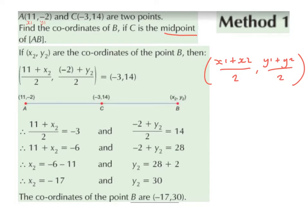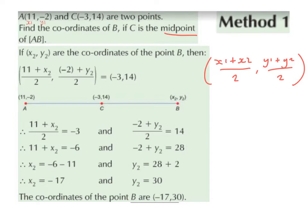So substituting into our formula, we swap x1 for 11, bring over the plus, and x2 stays as x2 because we don't know what x2 is — x2, y2 is B. Then we swap y1 for minus 2, bring over the plus, and y2 stays as y2. This is all over 2, and this is equal to point C, which is the midpoint of AB — which is minus 3, 14.